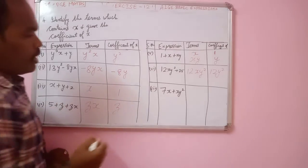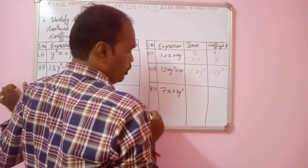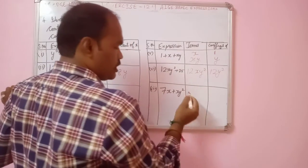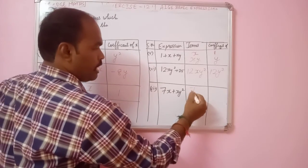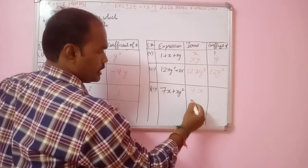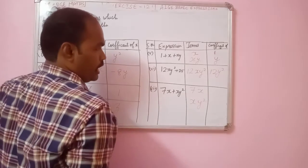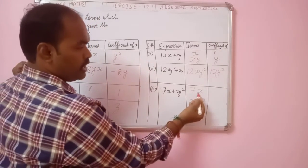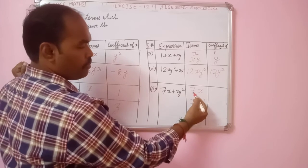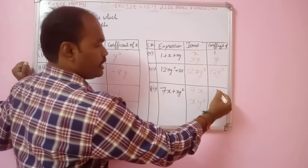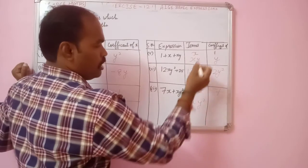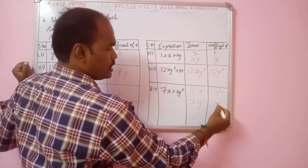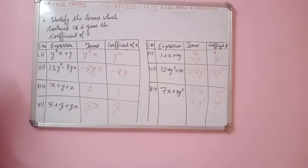Next, for the expression 7x plus xy², the terms which contain x are 7x and xy². The coefficient of x in 7x is 7, and the coefficient of x in xy² is y². That's all about identifying the terms which contain x.